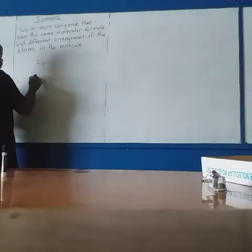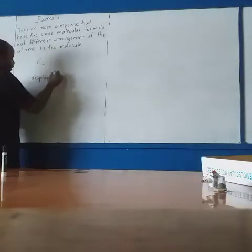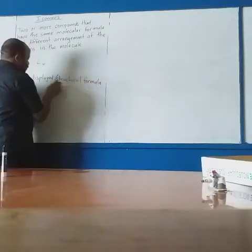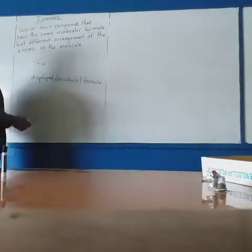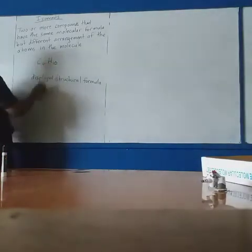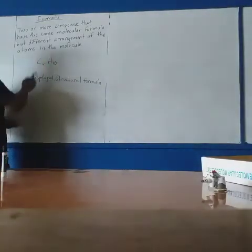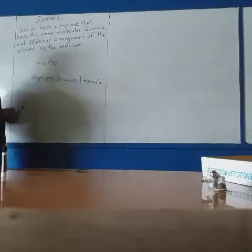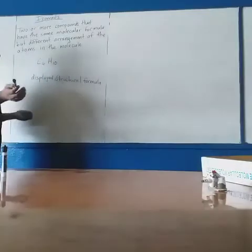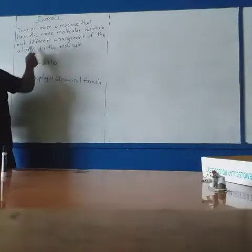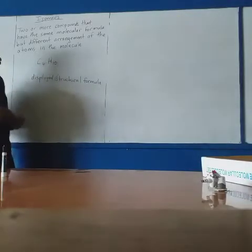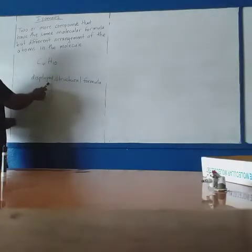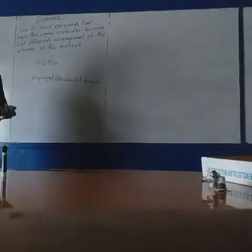Remember, the molecular formula tells you the amount of atoms you have in the compound, but what it does not show is the arrangement. The formula that shows the arrangement is called the display or structural formula. The molecular formula, for example C4H10, just tells you that it has four carbons and ten hydrogens. It does not tell you how the atoms are arranged, so the four carbon atoms can be arranged differently - and that is where the isomer comes in.